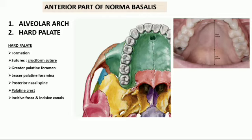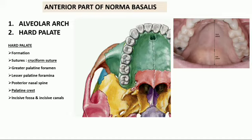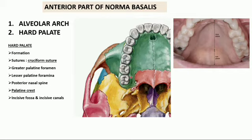The cruciform suture is an important feature of the hard palate in norma basalis. The posterior free border of the hard palate shows a midline projection called the posterior nasal spine. Just anterior to this posterior free border is a ridge called the palatine crest. The area between the posterior free border and the palatine crest provides attachment to the palatine aponeurosis, which will be studied in detail when learning the soft palate.